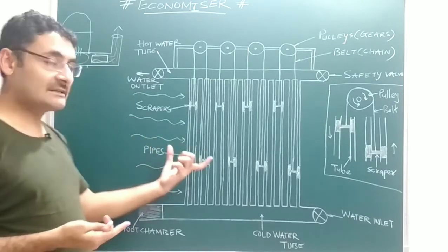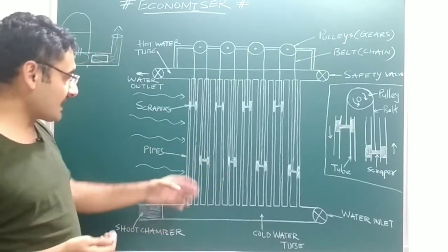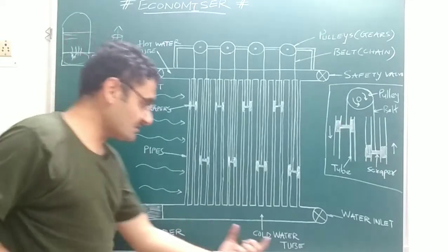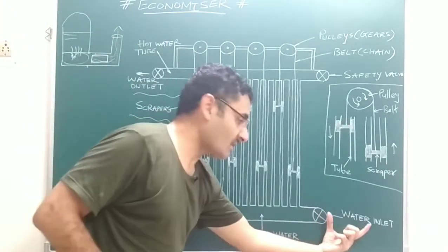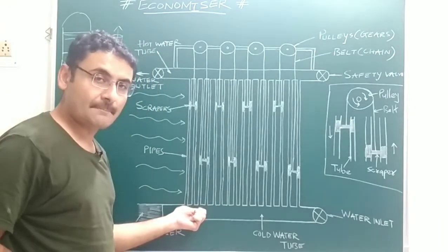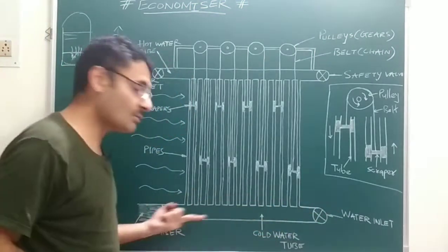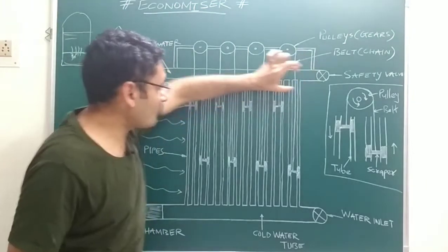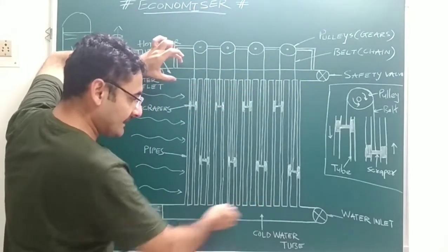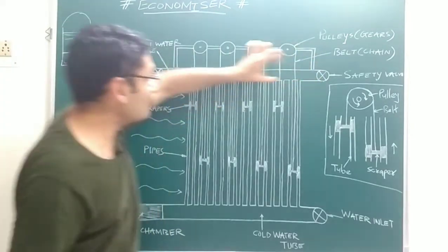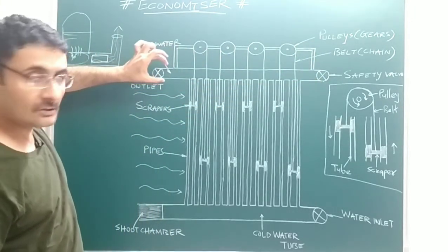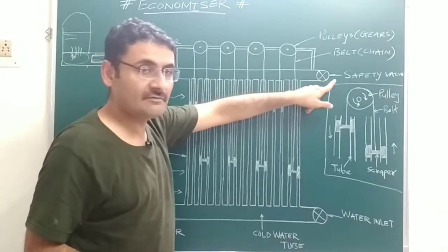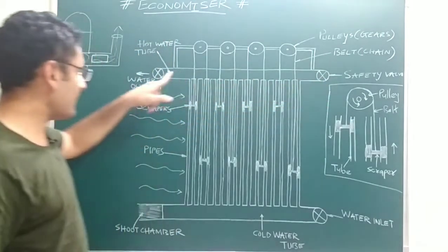Now we will discuss the construction. The economizer consists of two tubes: the first tube is known as the cold water tube, which has one water inlet through which we supply room-temperature or cold water. The second tube is known as the hot water tube. Inside the hot water tube, whatever cold water we have supplied gets converted into hot water. The hot water tube has one safety valve which provides safety to the boiler.